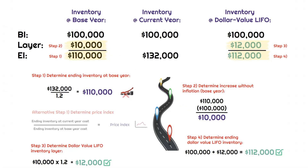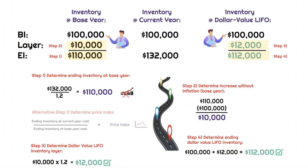Step three: the Dollar Value LIFO inventory layer. We bring back the price index of 1.2 and multiply it by the base year layer from step two: $10,000 × 1.2 = $12,000. Our beginning balance for Dollar Value LIFO is always the base year cost beginning balance of $100,000. Adding the $12,000 LIFO layer gives us step four — the ending Dollar Value LIFO inventory balance of $112,000.